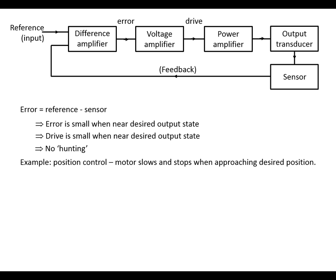An example of this would be a position control system where the motor is going to slow down and stop when it's approaching the desired position. With the on-off system, the drive signal is going to be full power even when it's close to the desired output state, so it's going to overshoot and constantly go one way and then the other.